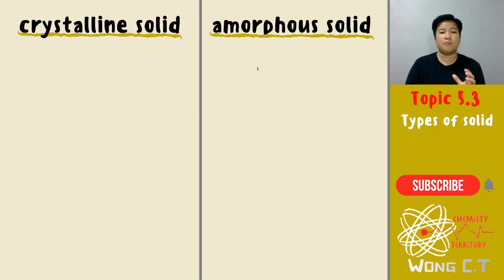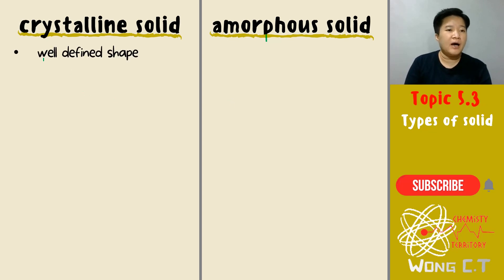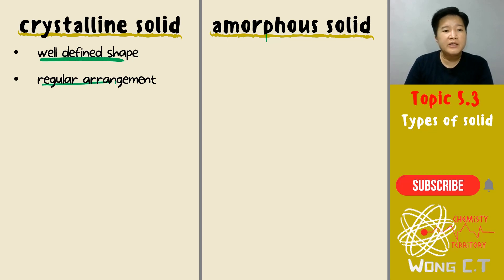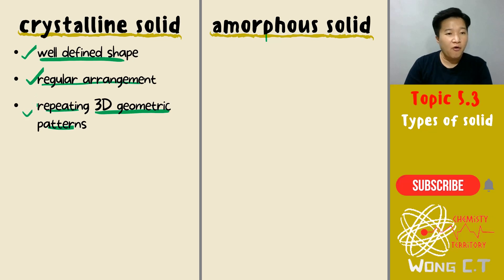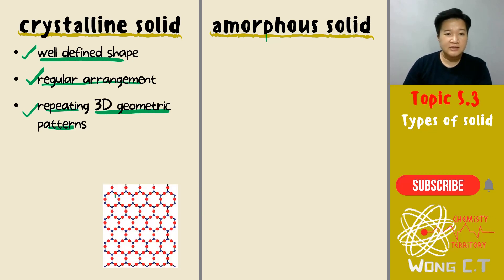What makes your crystalline solid and your amorphous solid different? Let's see one by one. Your crystalline solid will have a very well-defined shape. Well-defined shape means you will have a very regular arrangement — the arrangement is the same, repeated. Therefore your 3D geometrical patterns will keep repeating because of this well-defined regular arrangement. You can see the geometry is the same, basically repeating all the geometries.